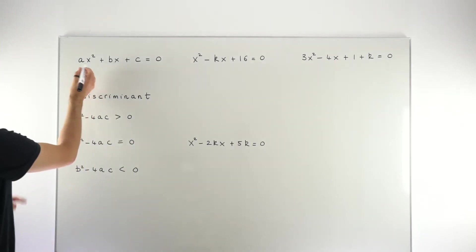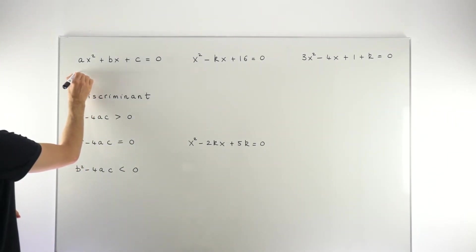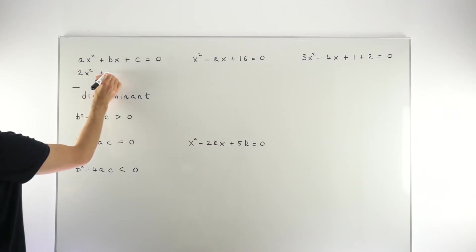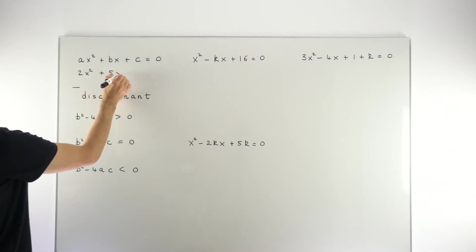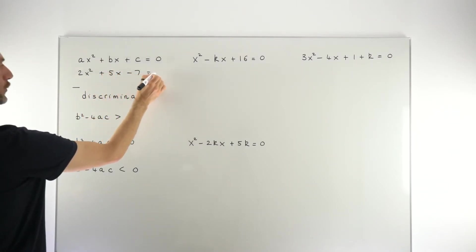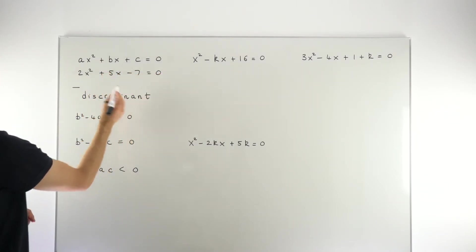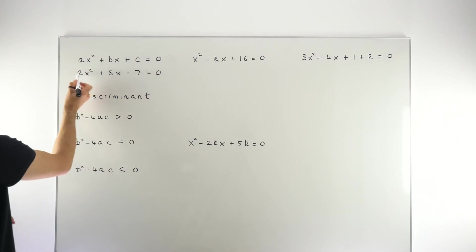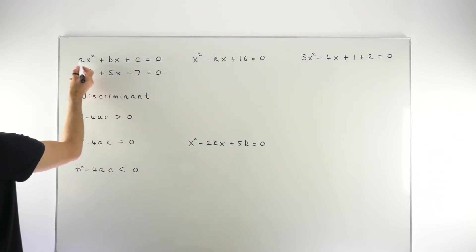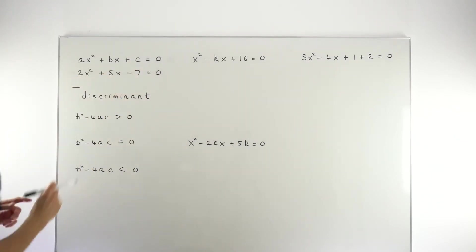An actual quadratic equation might be something like 2x² + 5x - 7 = 0. In the general form, we represent the coefficients 2, 5, and -7 as a, b, and c respectively.